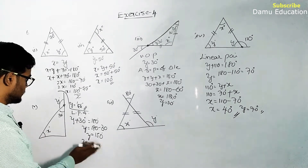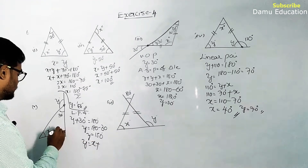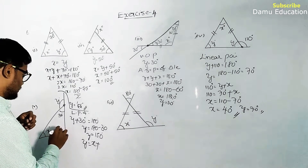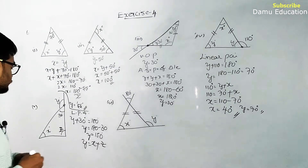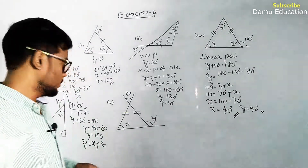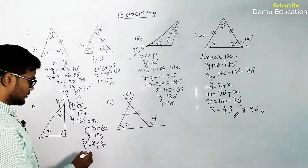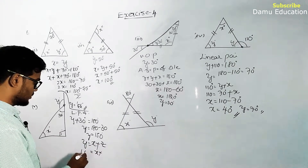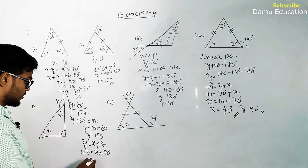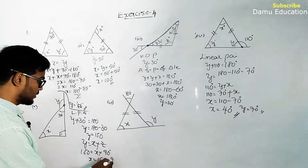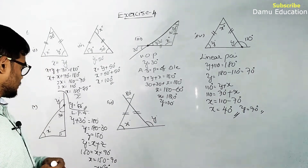Let z be the right angle, so z = 90°. Then y = x + z, giving 150 = x + 90, so x = 150 - 90 = 60°. Therefore x = 60° and y = 150°.